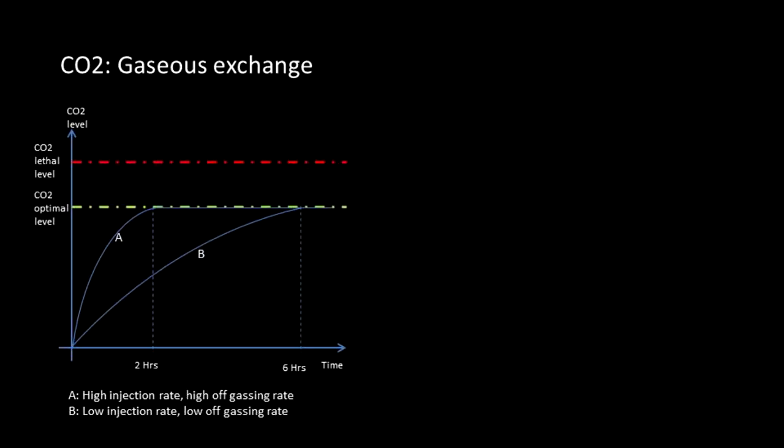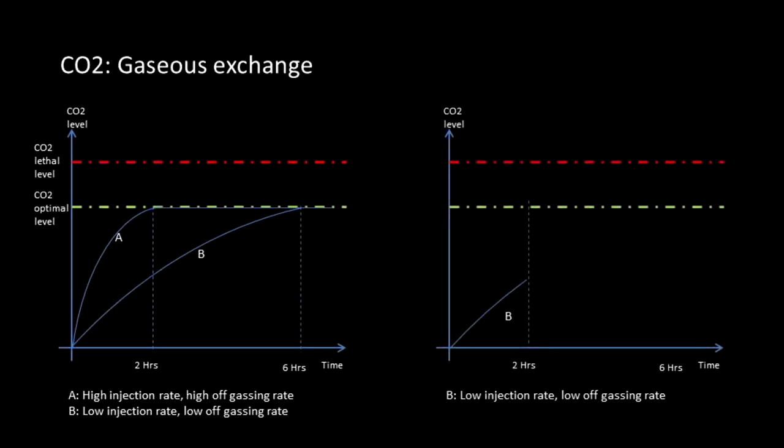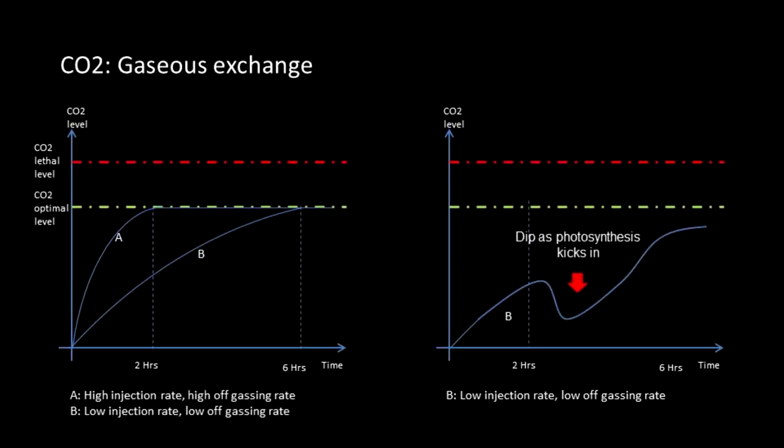However, the downside of using Plan B is that low injection rates are often more vulnerable to fluctuations. For example, say a tank with low injection rates starts injection an hour before lights on. CO2 starts to build up slowly, then CO2 levels take a dip as plant photosynthesis kicks on. CO2 levels then continue to build and hit the optimal level only late in the day.